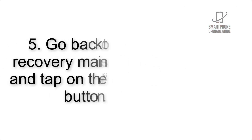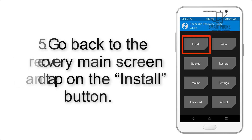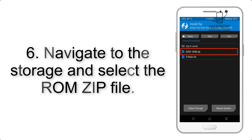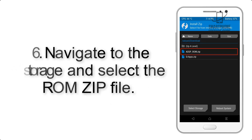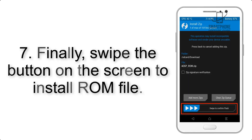Step 4: Swipe the button to wipe the device. Step 5: Go back to the recovery main screen and tap on the Install button. Step 6: Navigate to the storage and select the ROM zip file.